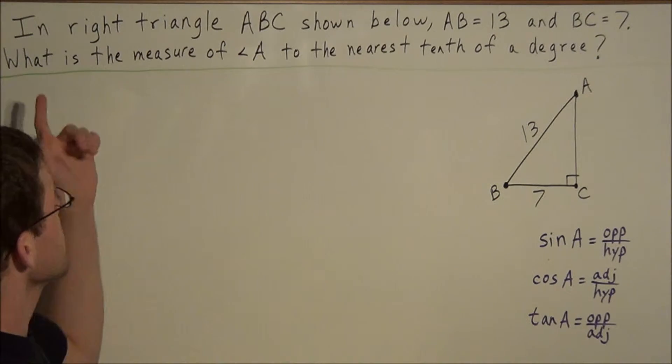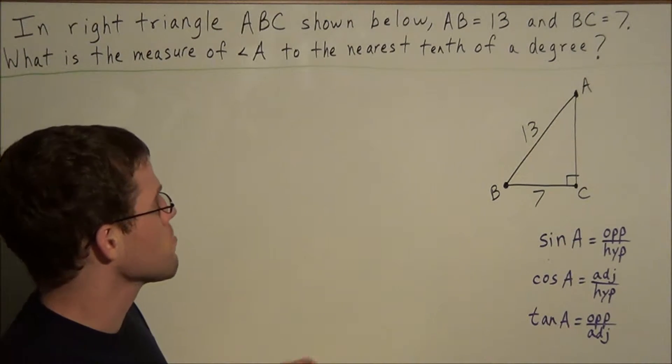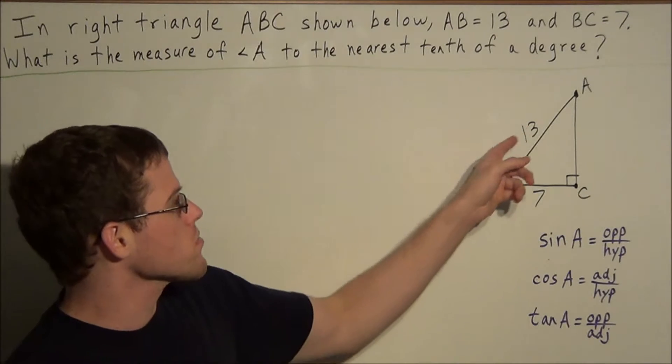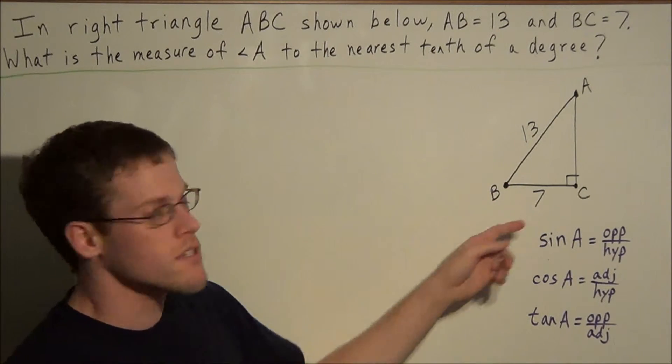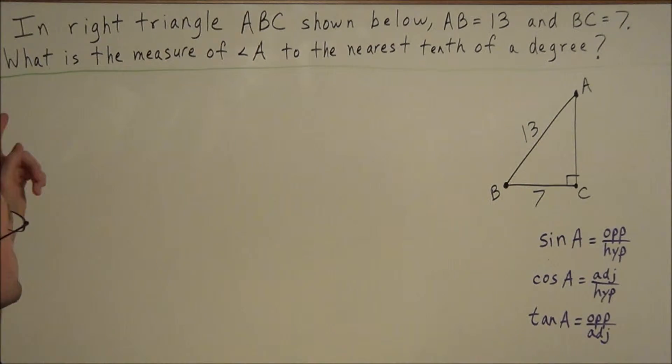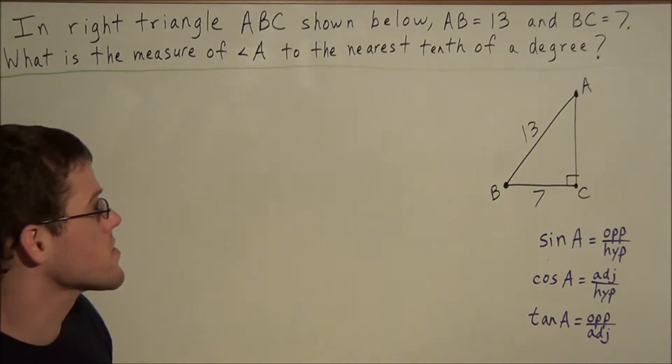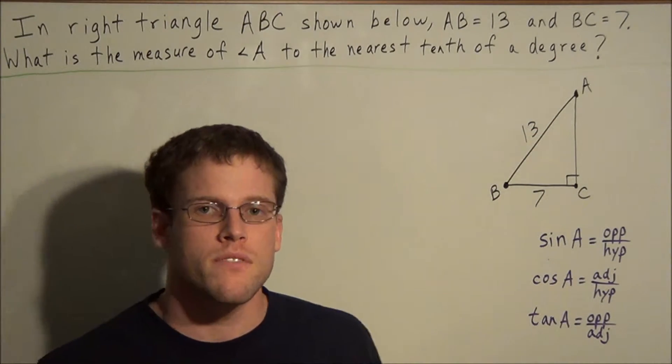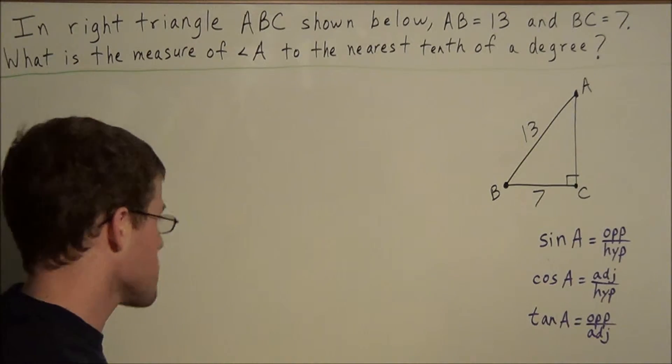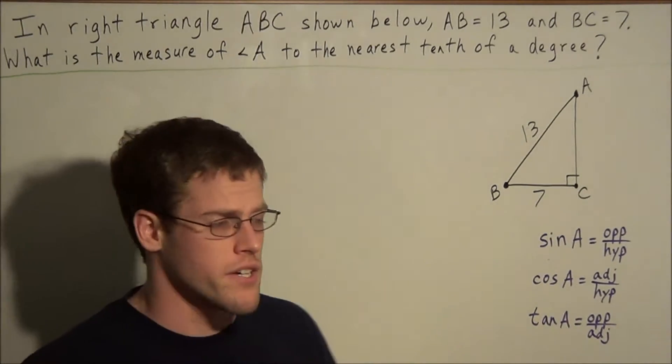So we have the problem in right triangle ABC shown below. We have AB is equal to 13 and BC is equal to 7, and we need to find what is the measure of angle A to the nearest tenth of a degree. So for problems of this type, the first thing you should do is label your diagram.